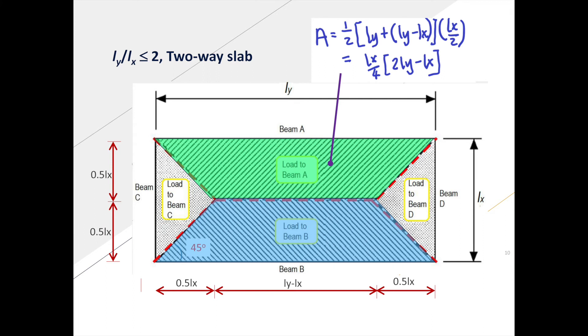Now, the highlighted is the region that will contribute to beam A and beam B, and the equation can be obtained using area of trapezium.